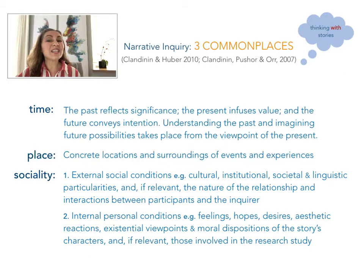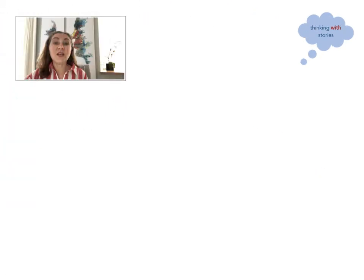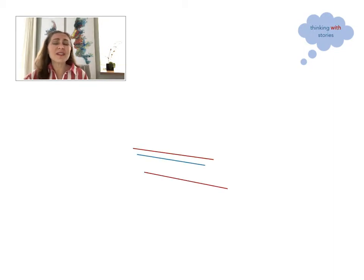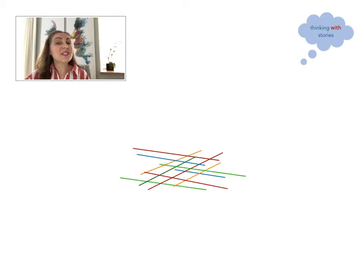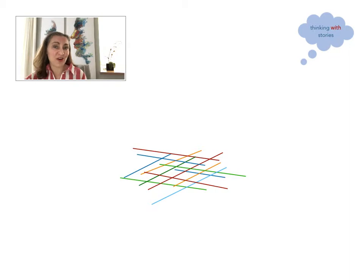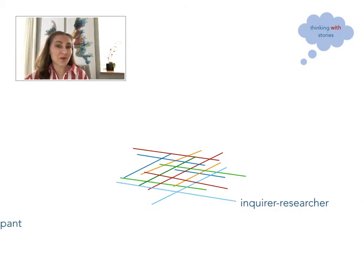Secondly, sociality includes internal personal conditions like feelings, hopes, desires, aesthetic reactions, existential viewpoints, and moral dispositions of the story's characters, and again of those involved in the research study. In re-storying, therefore, multiple narrative strands with the nuances and complexities of these three commonplaces are woven together. If the study involves the inquirer also sharing stories with participants, then the inquirer might provide two narrative strands — one as the researcher and one as a participant.